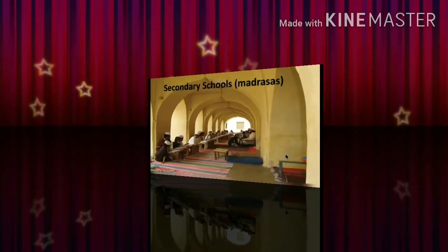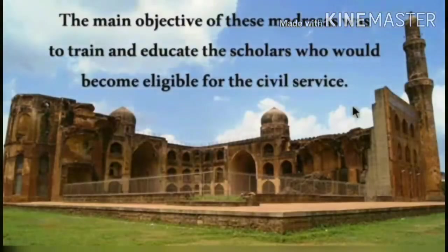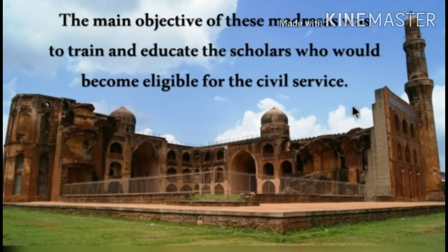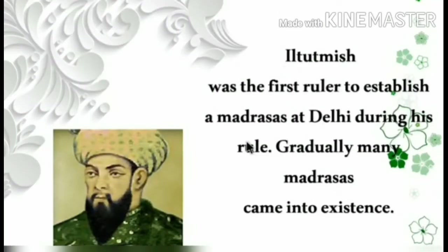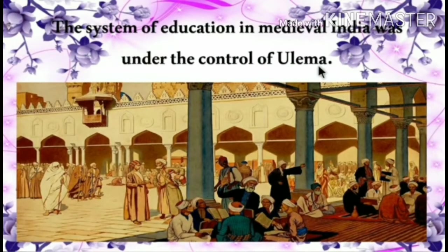Secondary schools, madrasas, were established to teach advanced language skills. The main objective of these madrasas was to train and educate scholars who would become eligible for civil service. Iltutmish was the first ruler to establish a madrasa at Delhi during his rule. Gradually, many madrasas came into existence. The system of education in medieval India was under the control of Ulema.